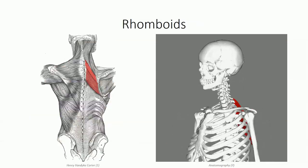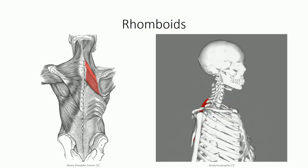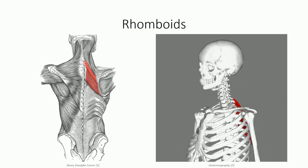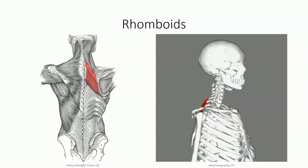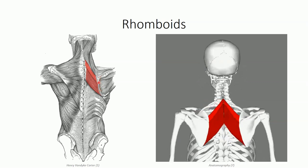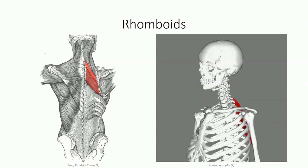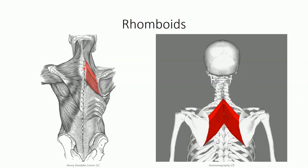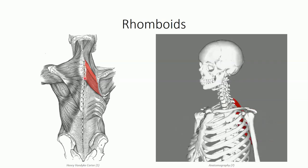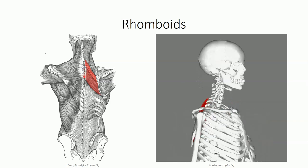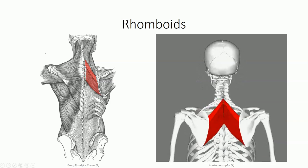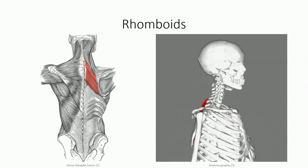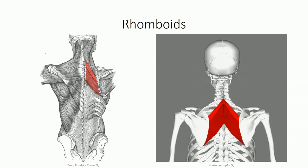The rhomboids are a pair of muscles named for their geometric appearance. They run from the vertebral column at an oblique inferolateral angle to insert on the medial border of the scapula. Rhomboidus minor typically originates off C7 and T1 spinous processes, while rhomboidus major originates off spinous processes T2 through T5. The rhomboids work with trapezius to retract and inferiorly rotate the scapula, similar to levator scapulae.